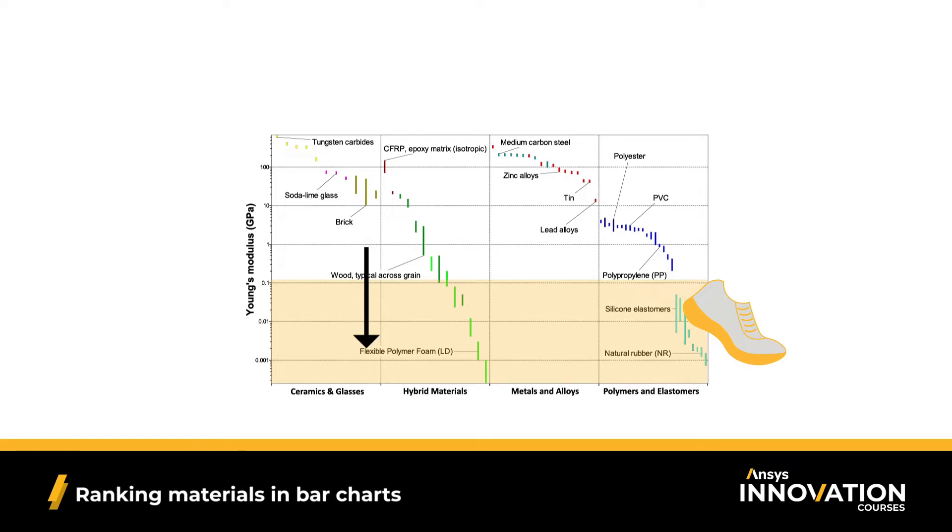Once again, using a logarithmic scale here instead of linear is very useful to help make the ranking process easier to visualize. While comparing one property is just fine, but design usually requires considering more than one property.